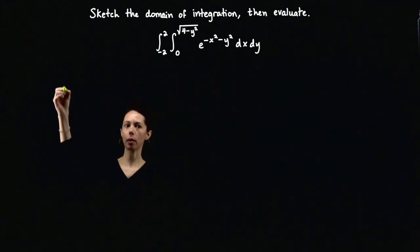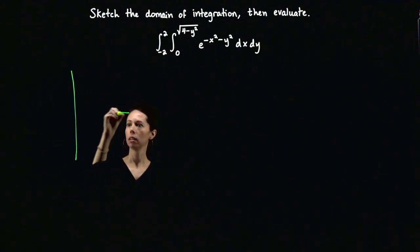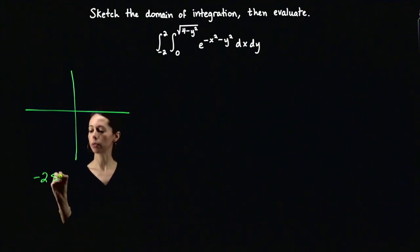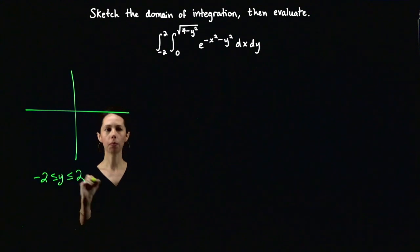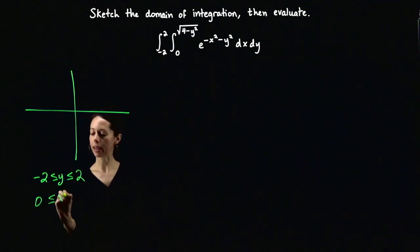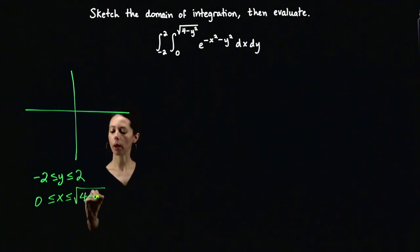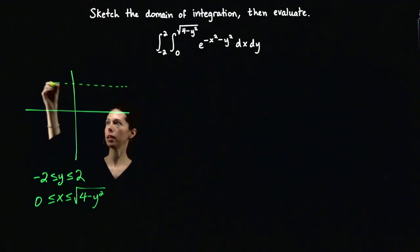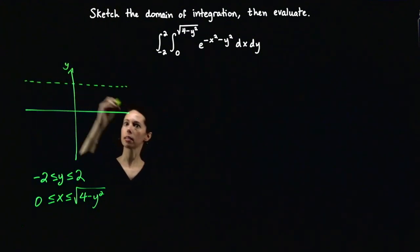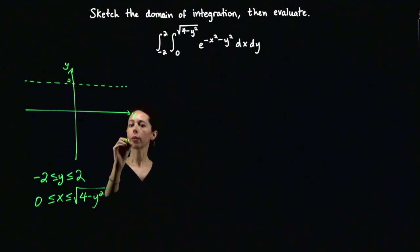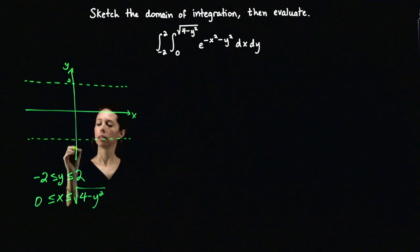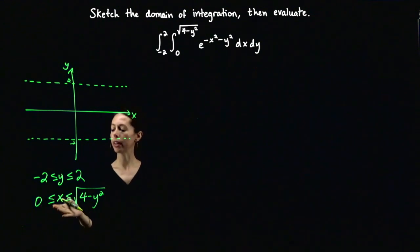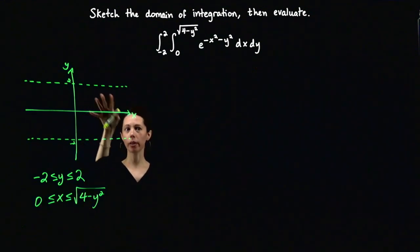I'm going to sketch the xy-plane. The bounds of integration tell us that negative 2 is less than or equal to y is less than or equal to 2, and 0 is less than or equal to x is less than or equal to the square root of 4 minus y squared. So our domain of integration is somewhere between these horizontal lines, and x is greater than or equal to 0, meaning we are on the right half plane.